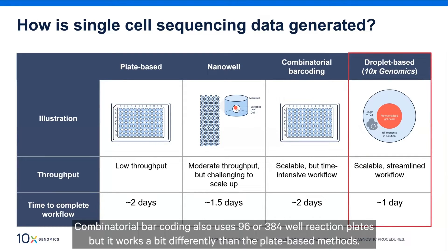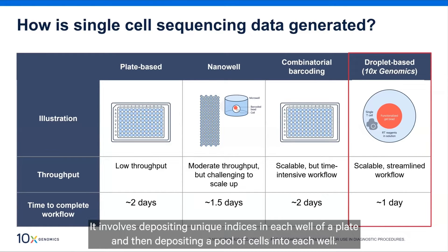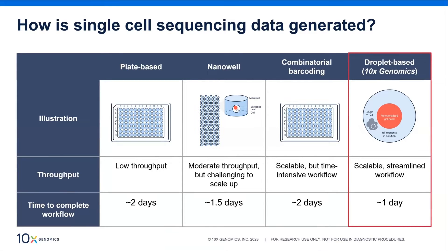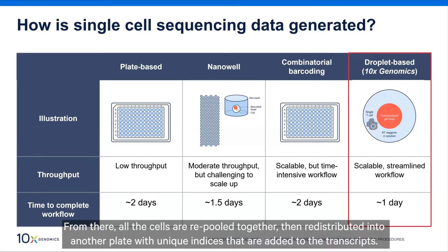Combinatorial barcoding also uses 96 or 384 well reaction plates, but it works a bit differently. It involves depositing unique indices in each well and then depositing a pool of cells into each well, so all transcripts from all cells in that pool share the same index. The cells are then repooled together and redistributed into another plate where additional unique indices are added to the transcripts.